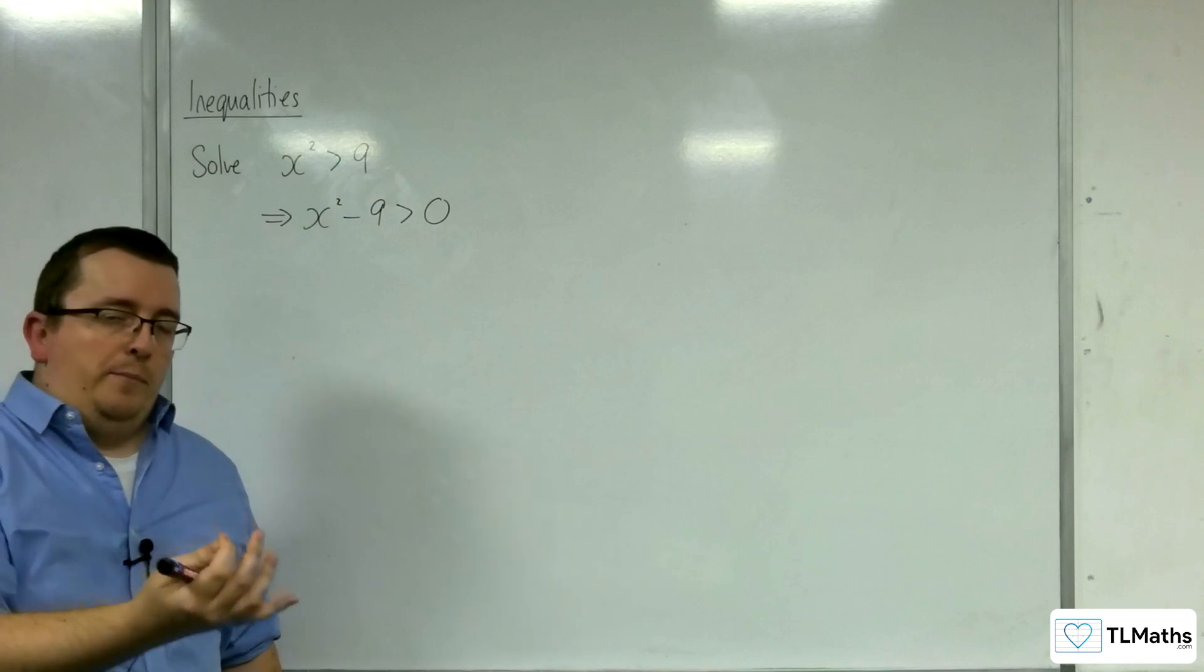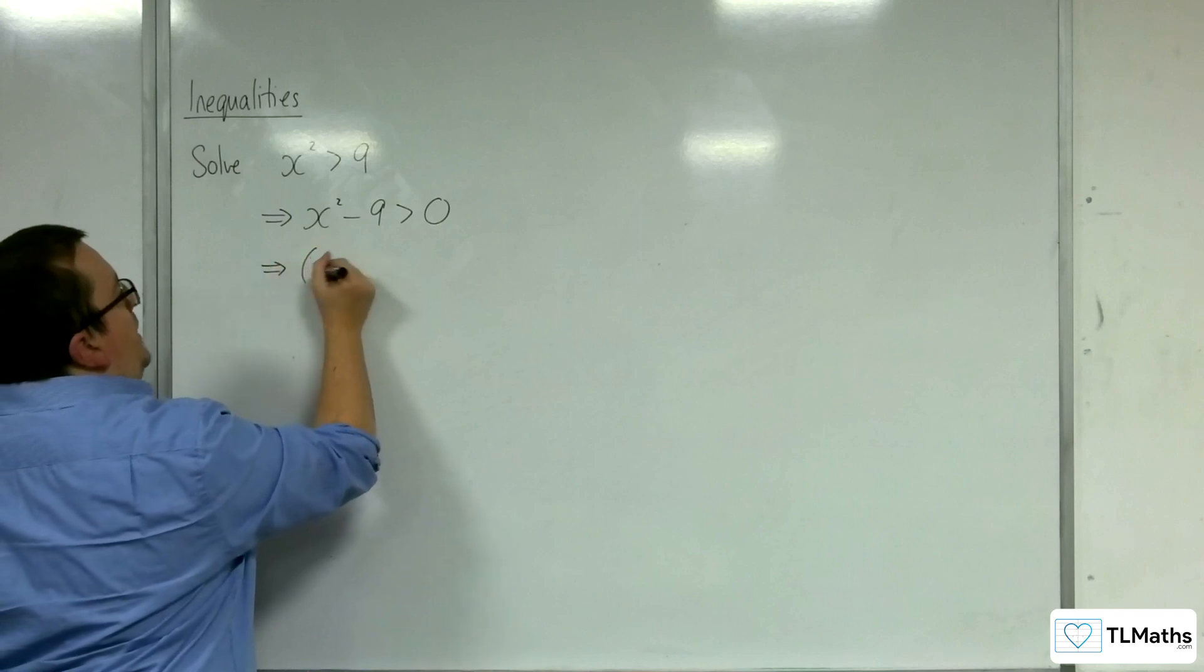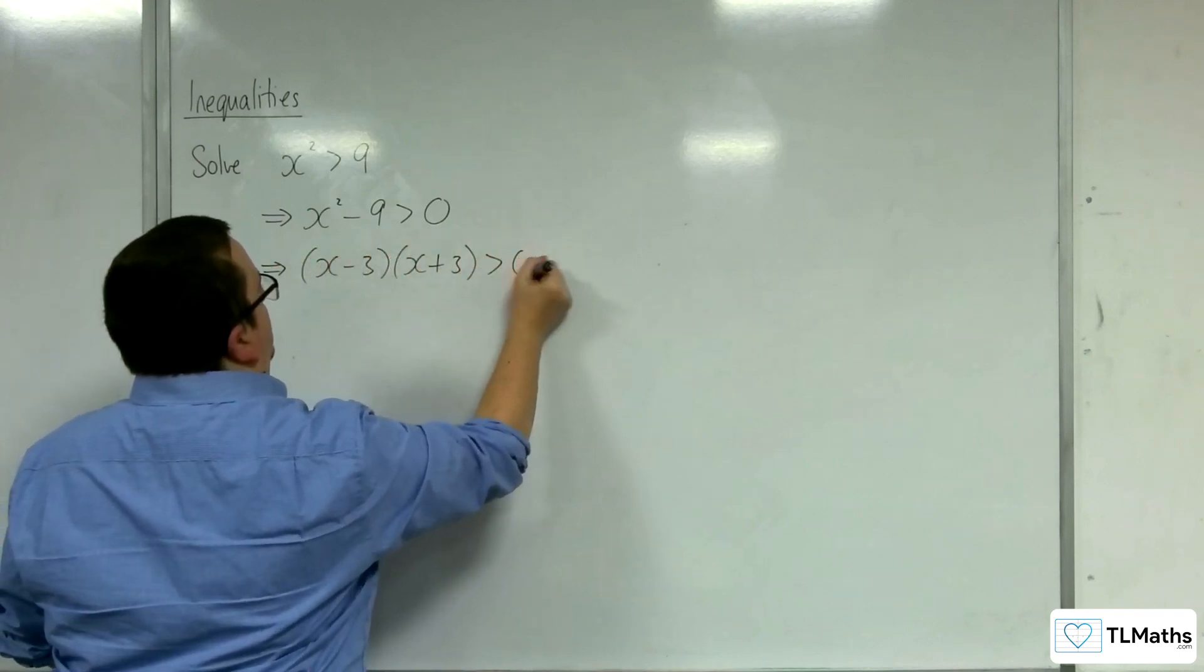The next step is I want to factorise that quadratic. Now it's the difference of two squares, so we've got (x minus 3)(x plus 3) is greater than 0.